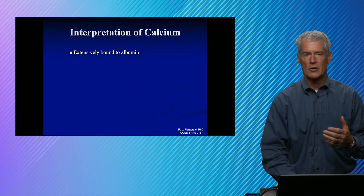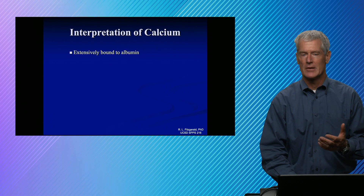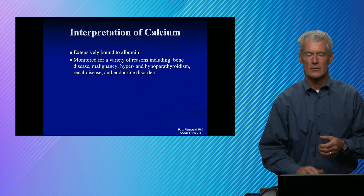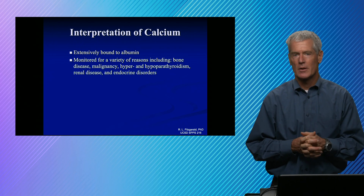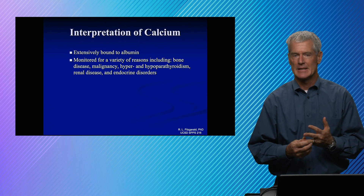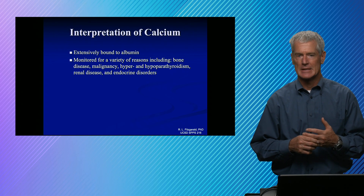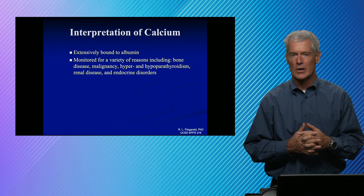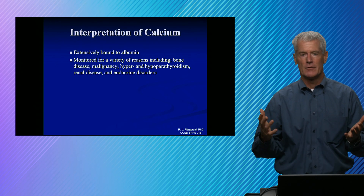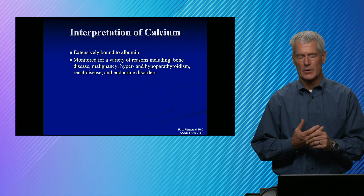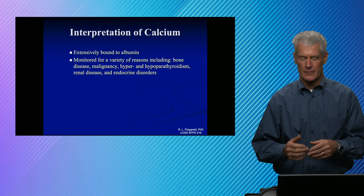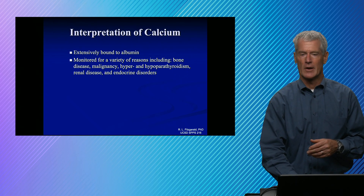When interpreting calcium, we also have to think about the patient's albumin status, because that can have a big effect on calcium concentrations. If you have a low albumin, then your total calcium will be low, and there are formulas you can use to correct that. Calcium is measured quite commonly — it's part of the basic metabolic panel. Clinically relevant causes of abnormal calcium include bone disease, malignancies — you get what's called hypercalcemia of malignancy, sometimes caused by parathyroid hormone-related protein (PTHRP) — and disorders of the parathyroid gland, either hyper- or hypoparathyroidism, as well as a variety of other endocrine disorders.